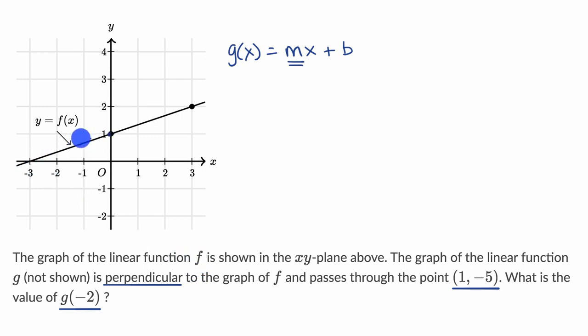So what is f's slope? Well, it looks like for every three we move to the right, we move up one. When the change in x is equal to three, the change in y is equal to one. We know that slope is change in y over change in x. So here the slope is one third.